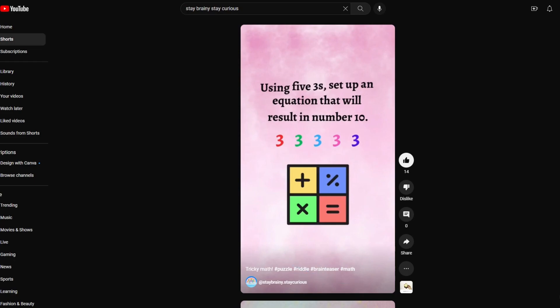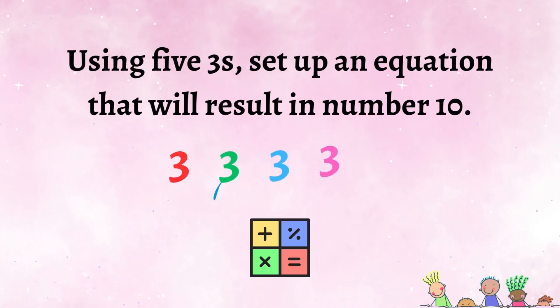This math brain teaser is asking you to set up an equation using five threes and make a result in number 10. You have all the math tools at your disposal. Feel free to be as creative as you can. I'm going to give you some extra time to think, but don't hesitate to press the pause button for more time. We came up with five different variations that will result in number 10. Can you get at least one?